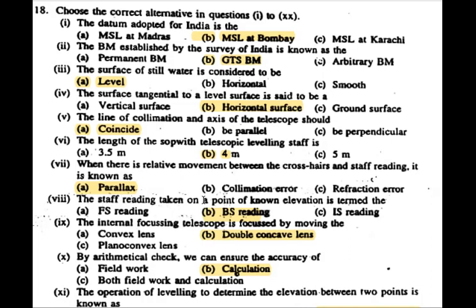Next question: The staff reading is taken on the point of known elevation. This is the BS reading — the back sight reading.